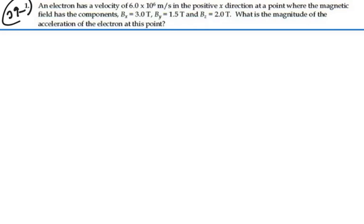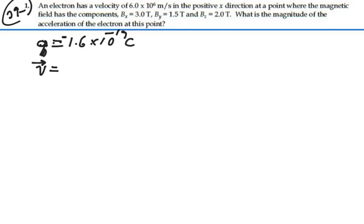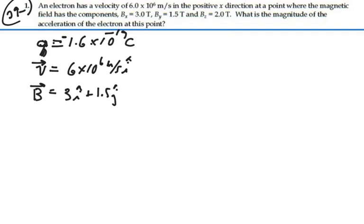In order to find the acceleration, we need to find the force. We know we have an electron. The charge on an electron is negative 1.6 times 10 to the minus 19 coulombs. The velocity of this electron, as a vector, is in the x direction: 6 times 10 to the 6 meters per second î. And our magnetic field as a vector is 3î plus 1.5ĵ plus 2k̂ tesla.